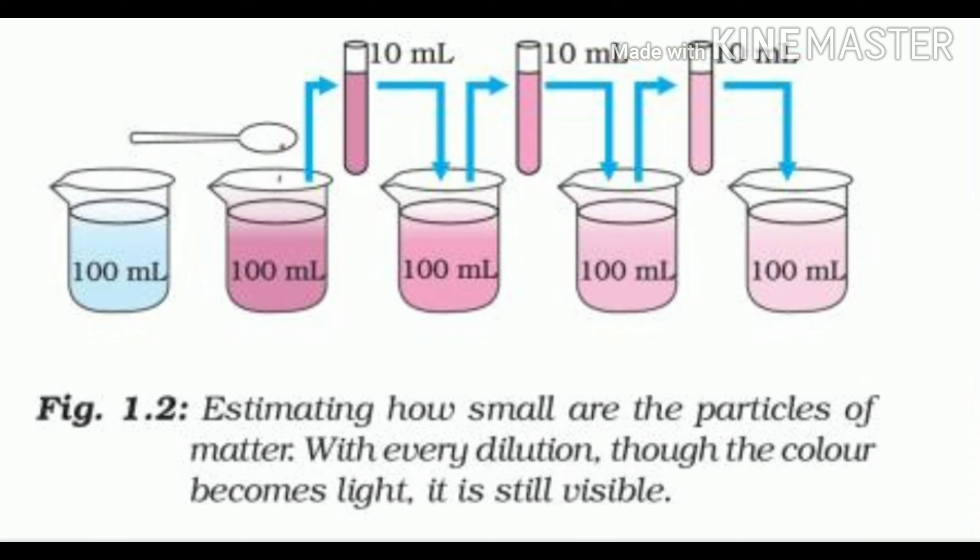In this activity, first we will take 2-3 crystals of potassium permanganate and dissolve them in 100 ml of water. Then, take out approximately 10 ml of this solution and put it into 90 ml of clear water. Again, take out 10 ml of this solution and put it into another 90 ml of clear water. After keep diluting the solution like this 5-8 times, we will observe that the water is still colored.